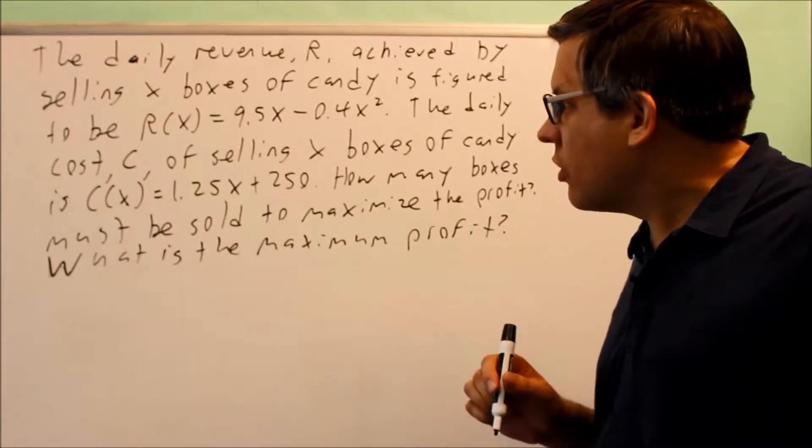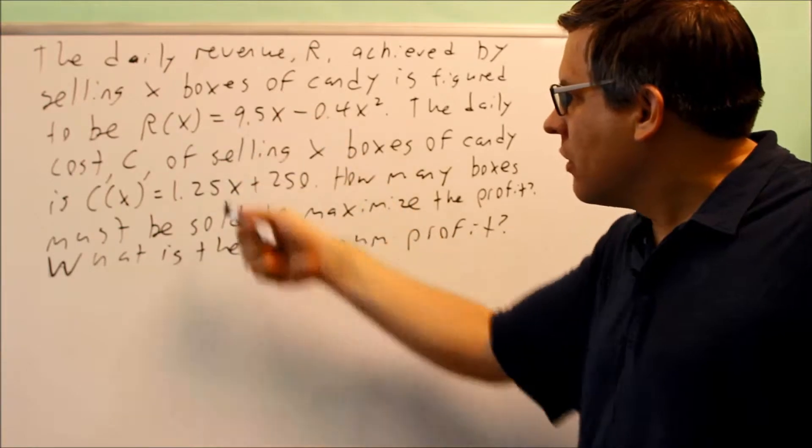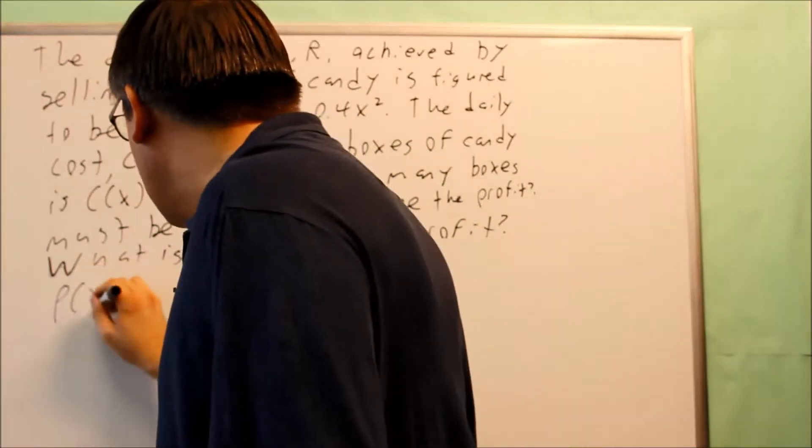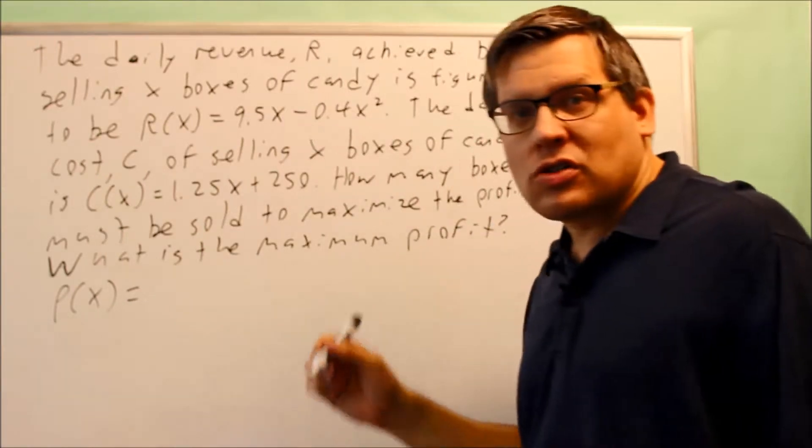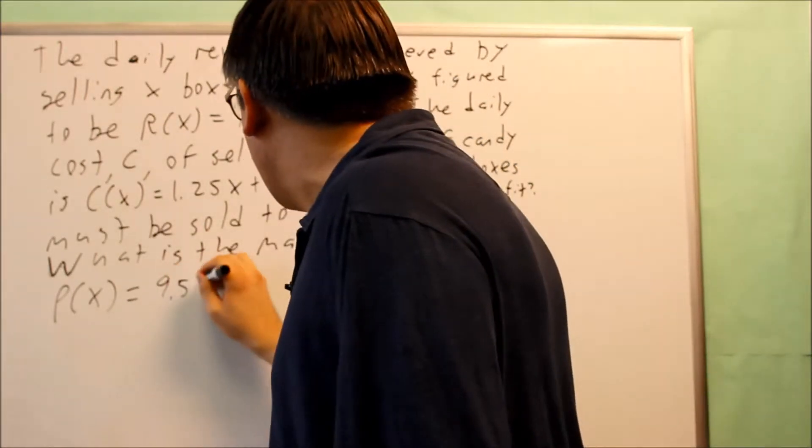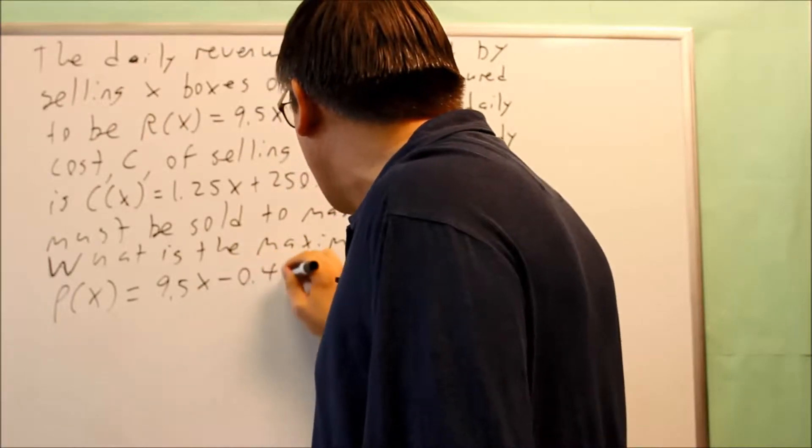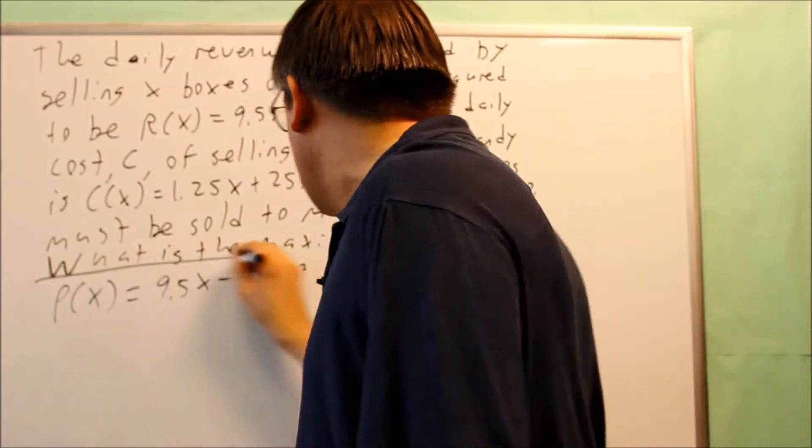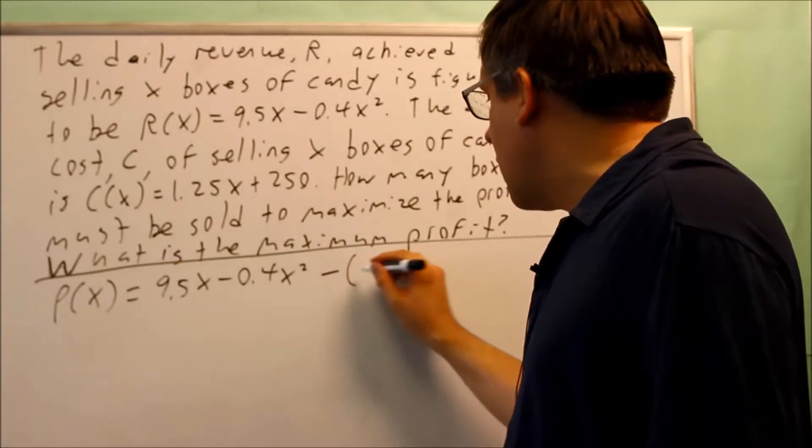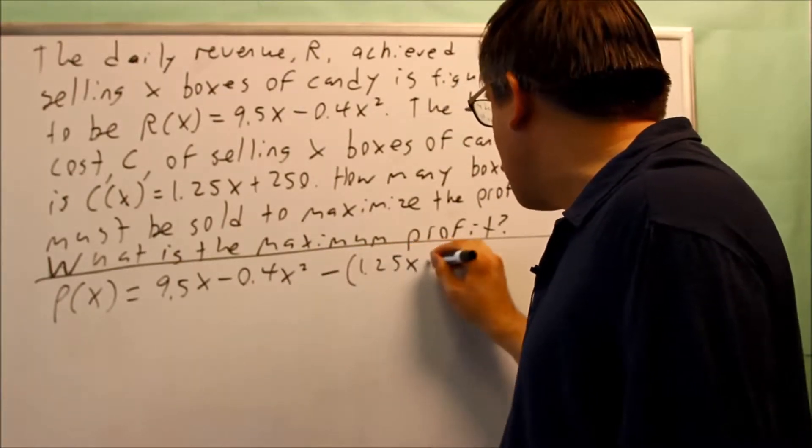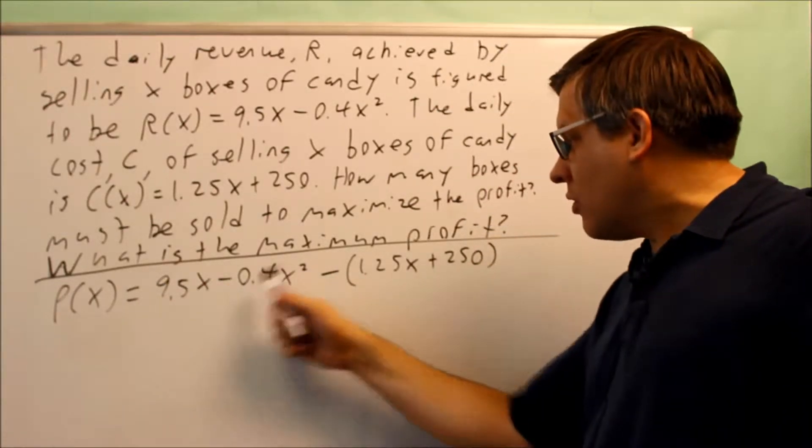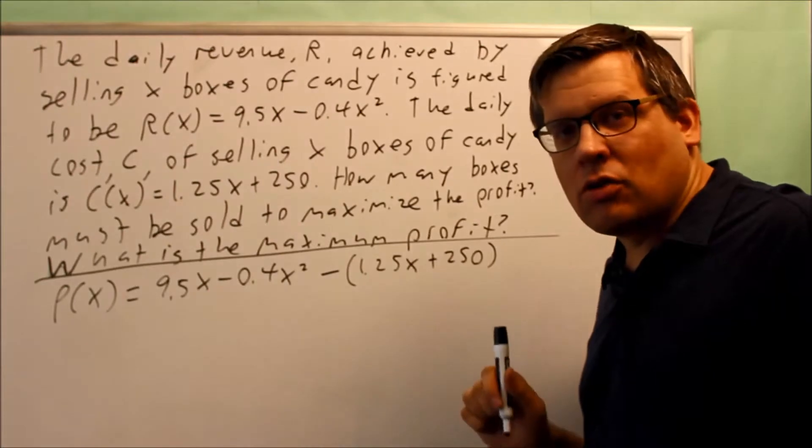We're going to subtract these two and that's going to give us our profit equation. So P(x) is equal to revenue minus the cost. Here's the revenue: 9.5x minus 0.4x squared. And we're going to subtract the cost equation from that, which is 1.25x plus 250. We're doing revenue minus the cost, here's the revenue and here's the cost, we're just subtracting those.